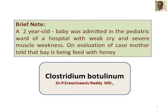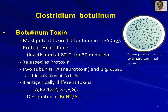The organism to be discussed with this case history is Clostridium botulinum, which is transmitted through substances like honey. Clostridium botulinum is a gram-positive bacilli with a sub-terminal spore — you can see the schematic diagram on the right side. The botulinum toxin is the most potent toxin, with a lethal dose for human beings of around 350 micrograms.